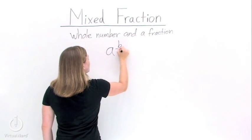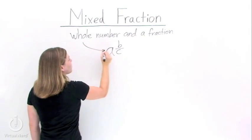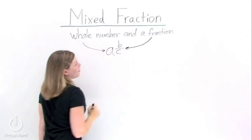The form for a mixed fraction looks like this: A and B over C, where A is our whole number and B over C is our fraction.